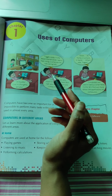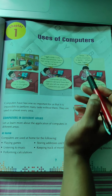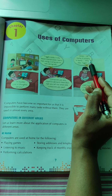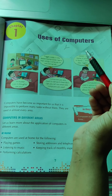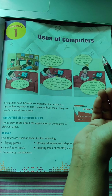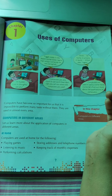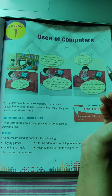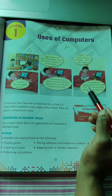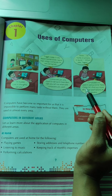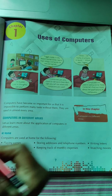Togo asks the boy: 'Can you tell me where else computers are used?' The boy answers: at home, in school, in bank. Togo asks where else. Then Togo explains: 'Computers are used in various fields. Let's find out more about the applications of computer.'